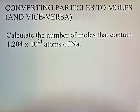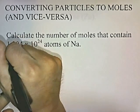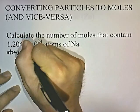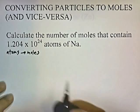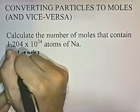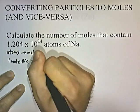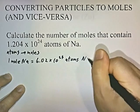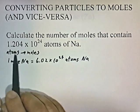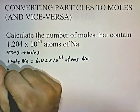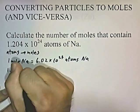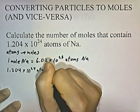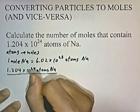Calculate the number of moles that contain 1.204 times ten to the 24th atoms of sodium. We're going to convert atoms into moles. We need to know that 1 mole of sodium equals 6.02 times ten to the 23rd atoms of sodium. We'll do some factor labeling: take 1.204 times ten to the 24th atoms of sodium and write it as a fraction over 1.